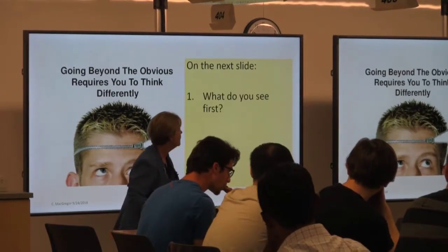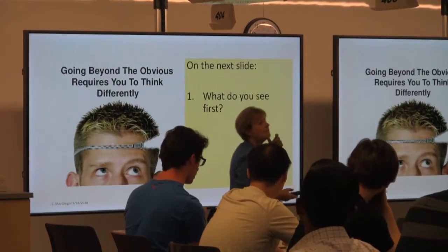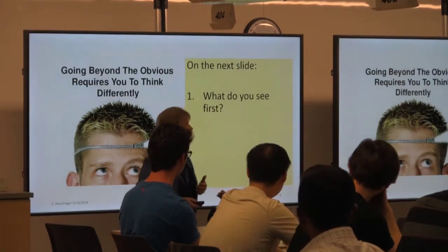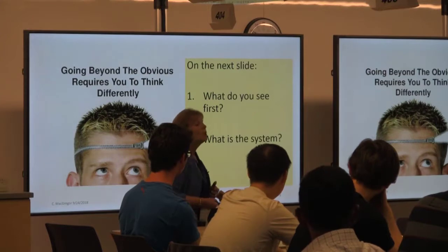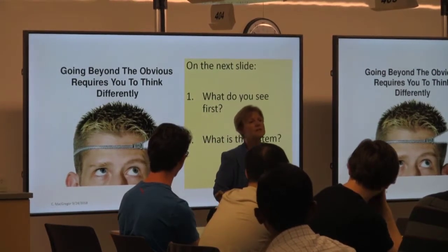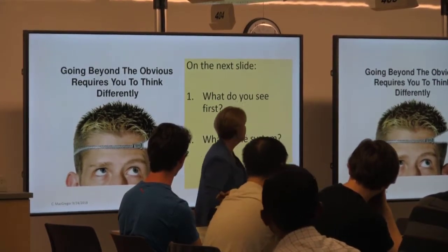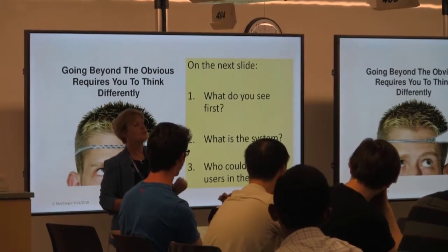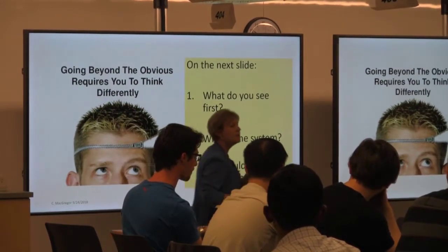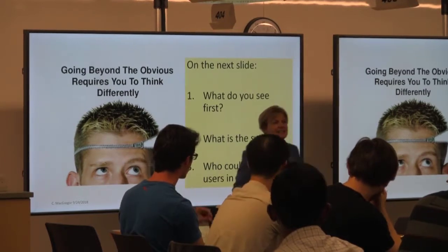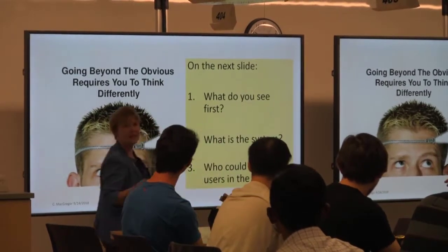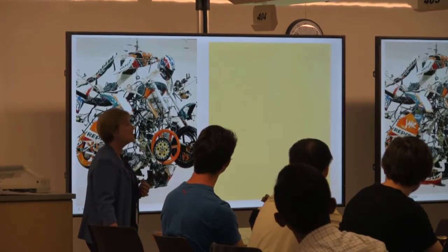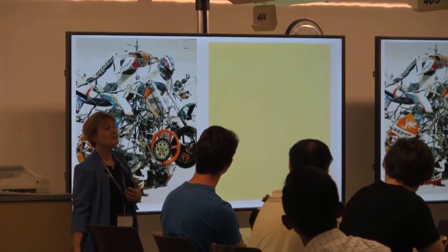One of the things we'd like to do is get you to think a little bit differently and go beyond the obvious, because the obvious has us being kind of lazy. On the next slide, ask yourself: what do you see first? What is the system being represented in the picture, and who could be the users in the system? We'll use this as a little practice.